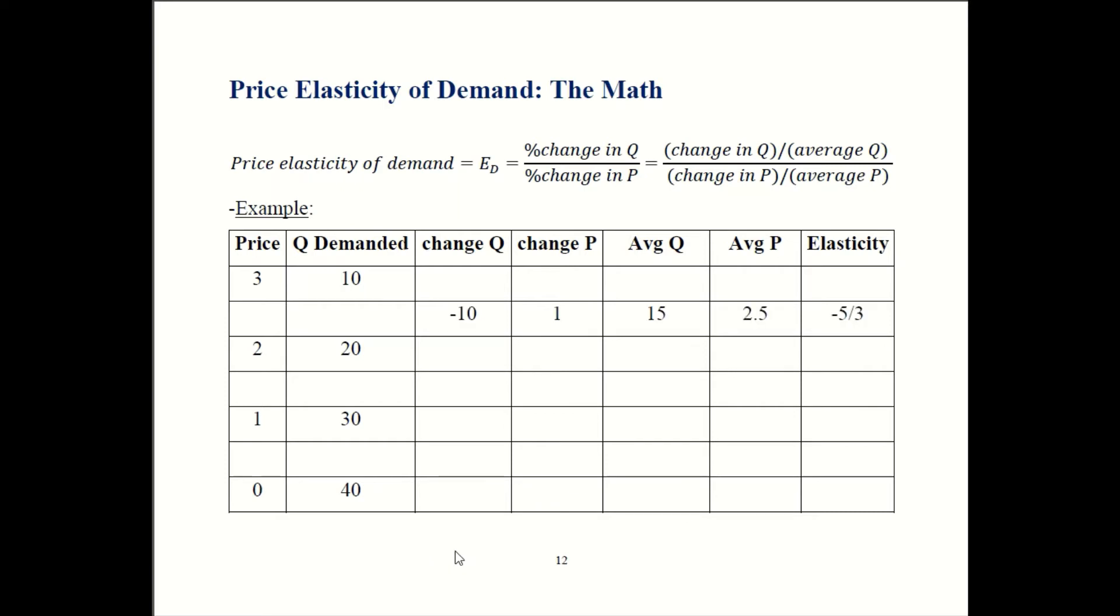So here the quantity goes down by 10 from 20 to 10. So that'd be a negative 10 over there. Price goes up by one from two to three. That's an increase of one. So that's why I have change in P of one over here.